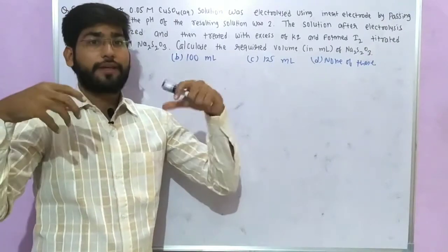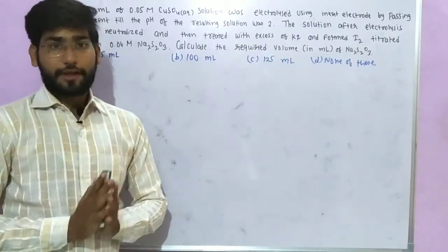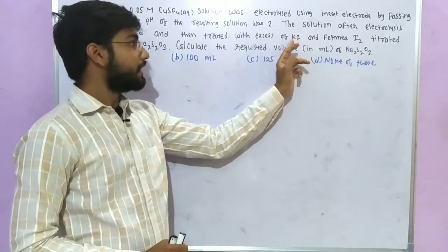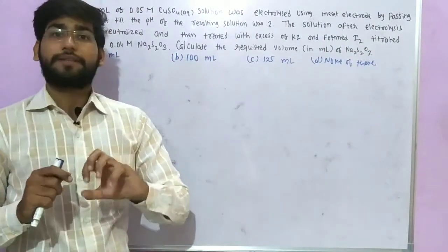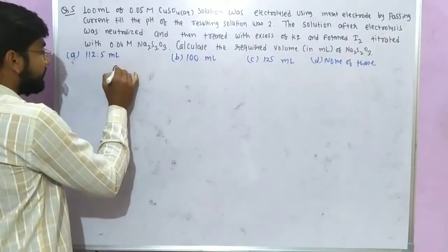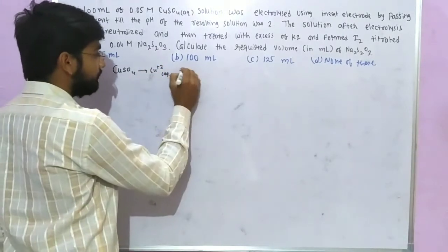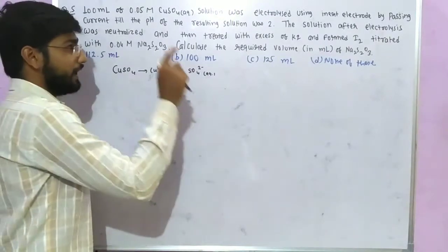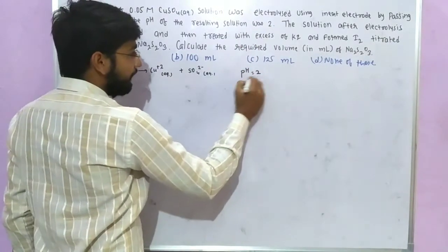In electrolysis, we look at what deposits at the anode and cathode. Here we have a copper sulfate solution, so copper ions are present. The copper sulfate solution dissociates into Cu²⁺ and SO₄²⁻ ions. The electrolysis continues until the pH of the solution reaches 2.